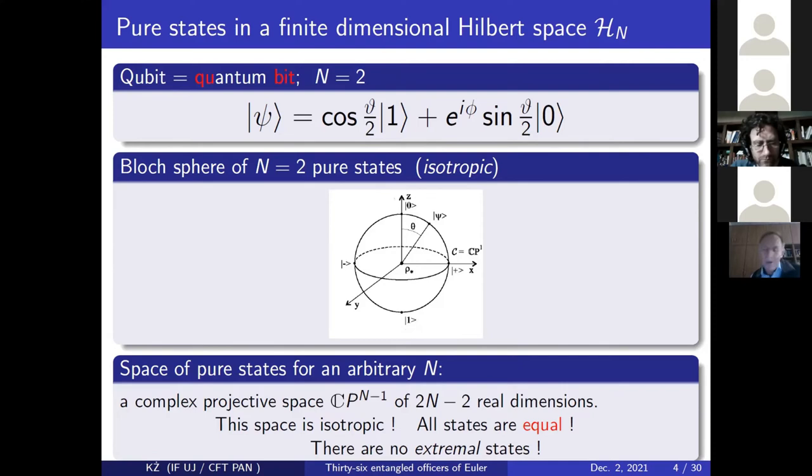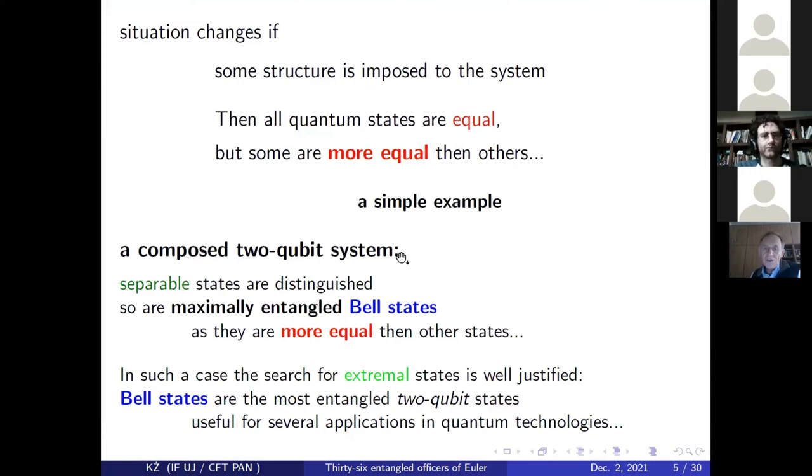What about quantum states? Let me make a very short introduction. So we consider finite dimensional Hilbert space, like n dimensional Hilbert space. If n is 2, we have a qubit, so quantum bit. Any point at the Bloch sphere represents a state.